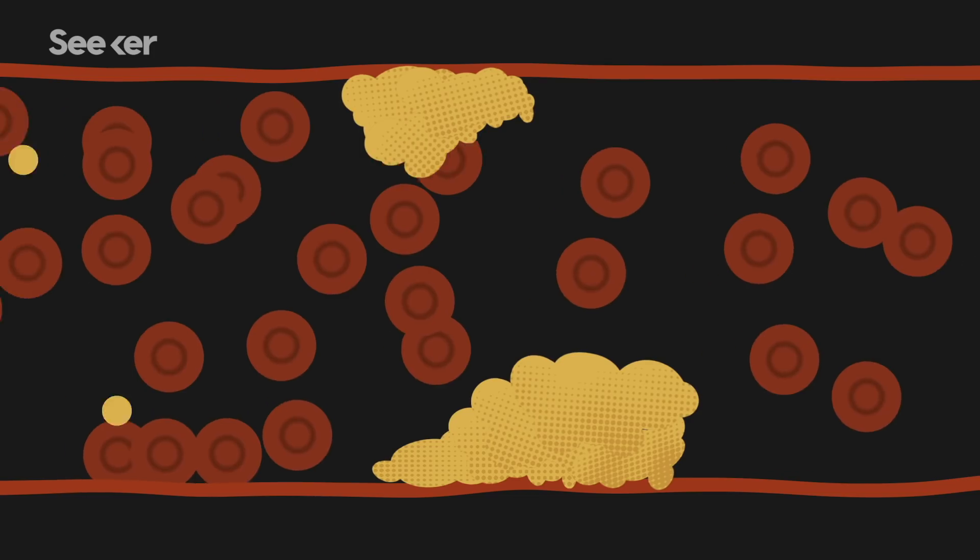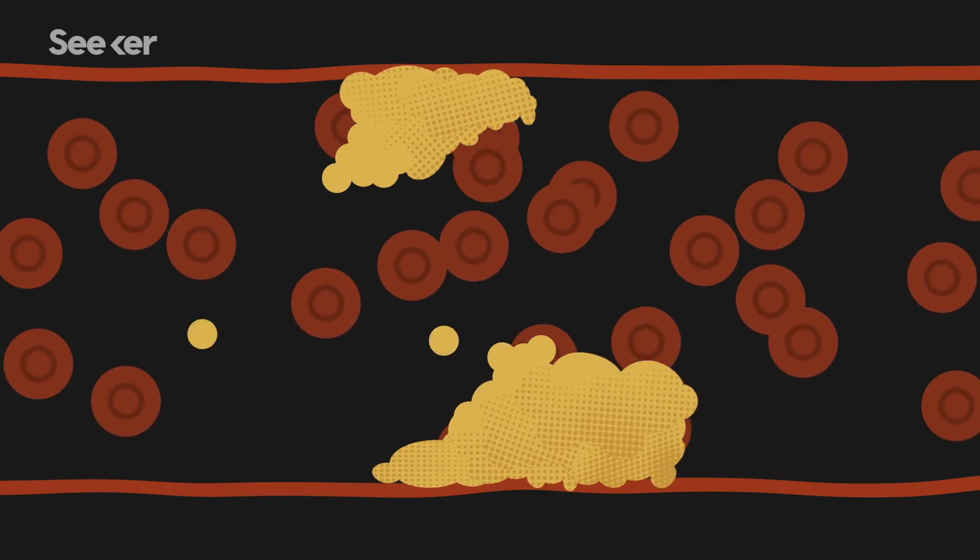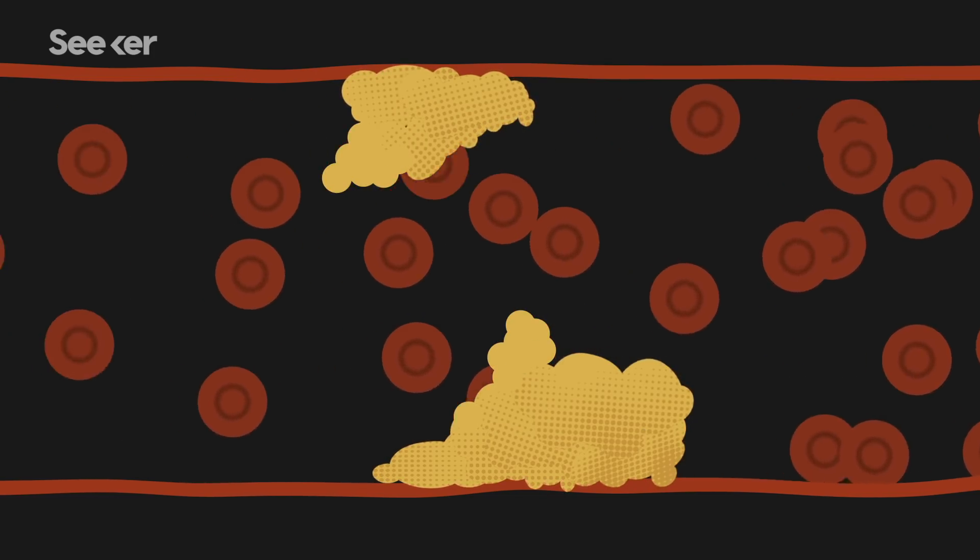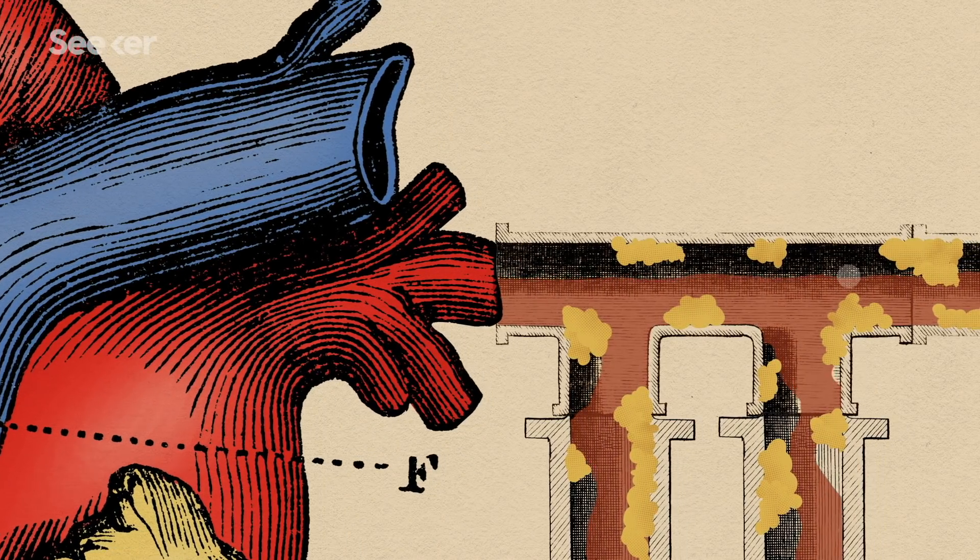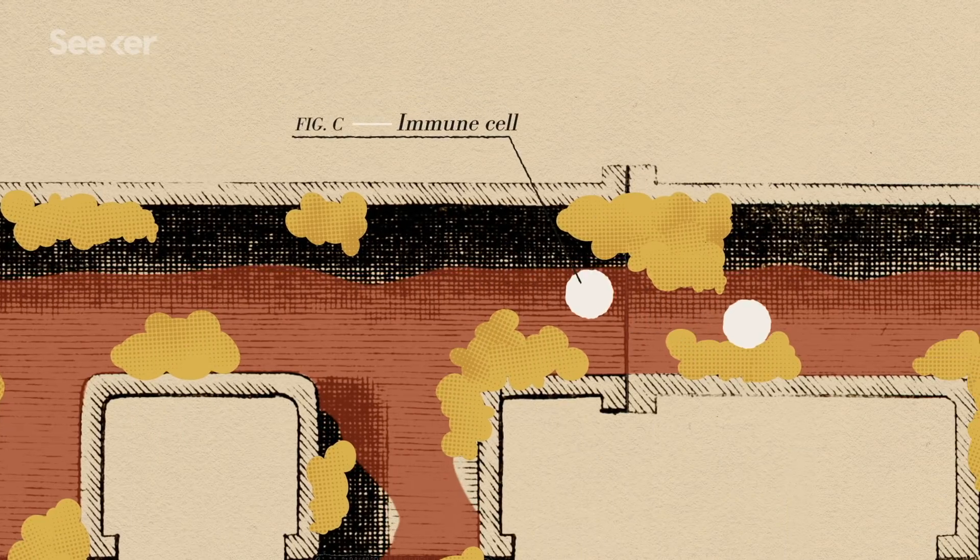But if there's an imbalance, the bad cholesterol can build up on the walls of your arteries, increasing your risk of a heart attack. One way to think of the arteries around your heart is like pipes. When those pipes get filled with bad cholesterol, it can create a kind of clog.